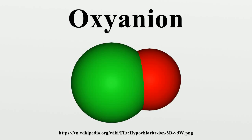Many oxoanions of elements in lower oxidation state obey the octet rule and this can be used to rationalize the formulae adopted. For example, chlorine has two valence electrons so it can accommodate three electron pairs from bonds with oxide ions. The charge on the ion is +5 − 3×2 = −1, and so the formula is ClO3^-. The structure of the ion is predicted by VSEPR theory to be pyramidal, with three bonding electron pairs and one lone pair.